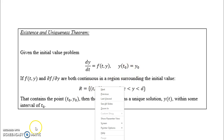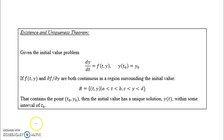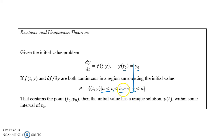What we need is a t₀ and y₀ such that around that t₀ value and around that y₀ value — around that ordered pair — the function is continuous in both the y and the t directions.